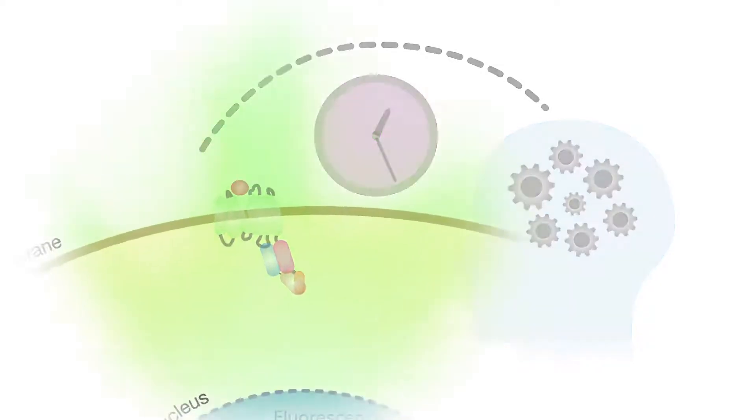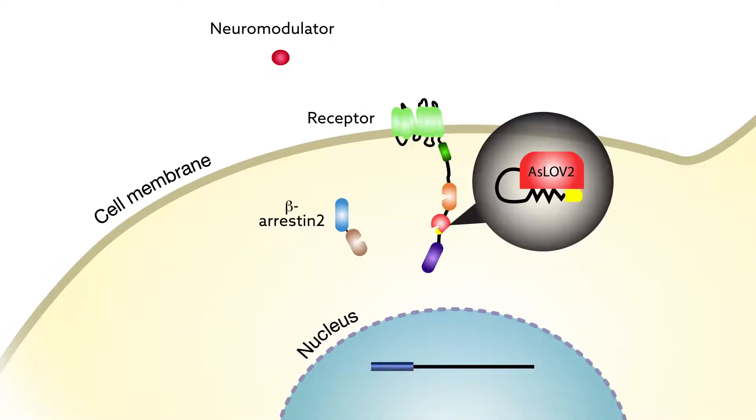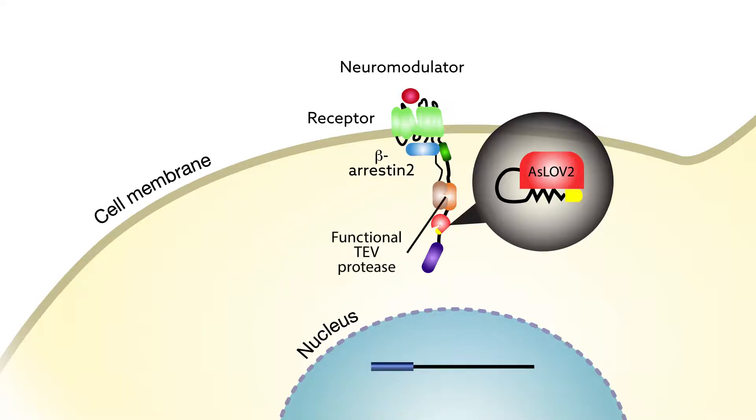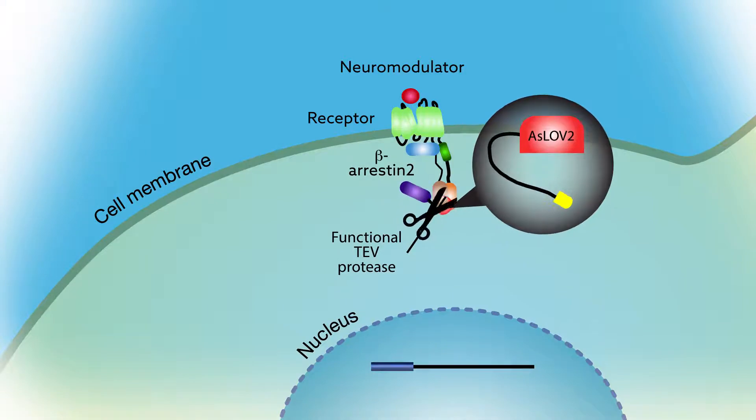The researchers overcame this limitation by adding an external, light-controlled switch to existing sensors. With this switch, they could restrict the sensor's activation and its reporting of the neuromodulator's effects to events that occurred when they were shining blue light.